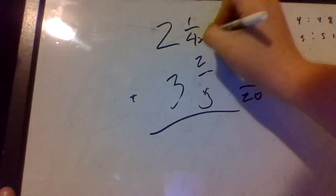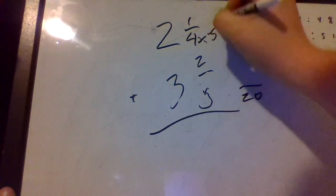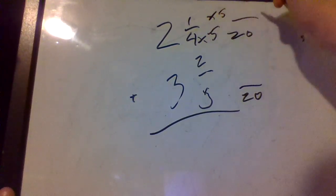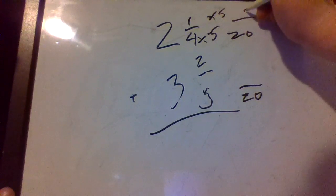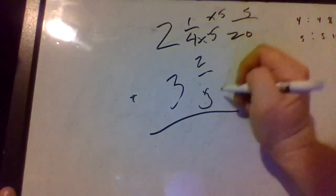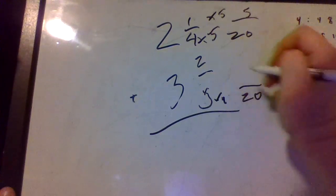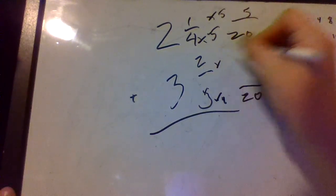So we're gonna multiply four by five to get twenty, so we multiply the top by five. Five times one is five. Down here we're gonna multiply the bottom by four to get twenty, we multiply the top by four. Two times four is eight.